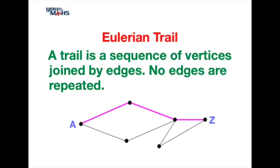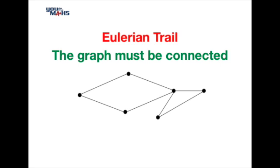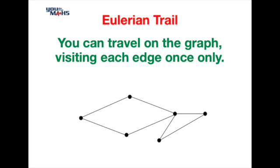So what makes a trail Eulerian? Well the first thing is the graph must be connected, in other words there's a way to travel from one vertex to any other vertex in the graph. To be a Eulerian Trail on the network or graph you must visit every edge but only once. You can repeat vertices.